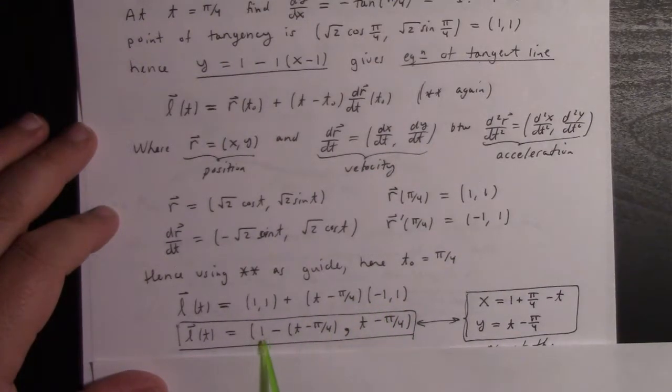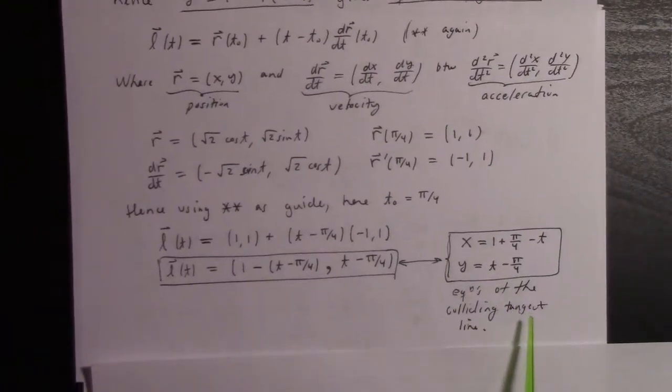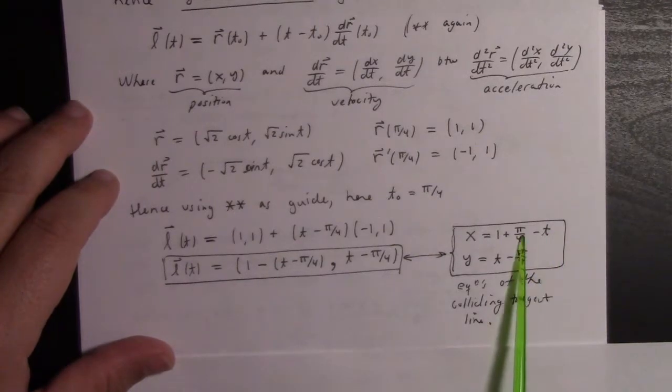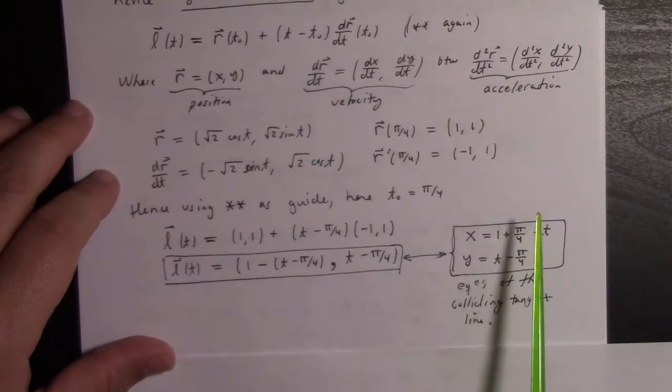And lo and behold, we get this as a parametrization for the colliding tangent line, which gives us x = 1 + π/4 - t and y = t - π/4. Just as a check, if you plug in π/4, you get (1,0), which we were expecting because...